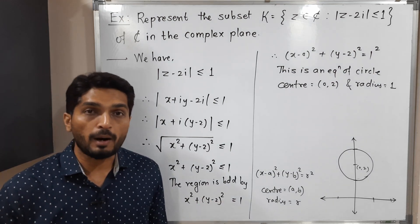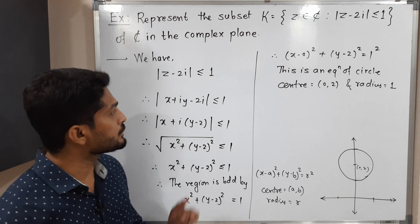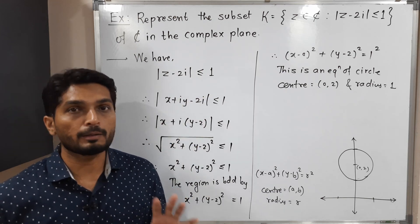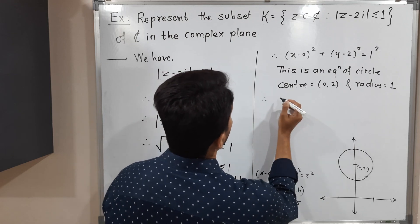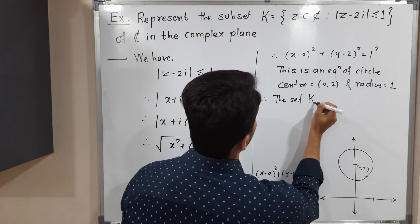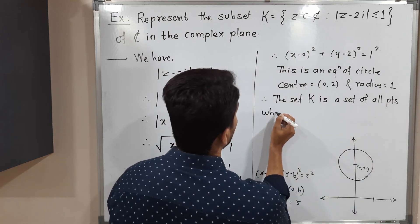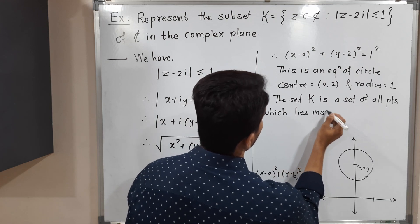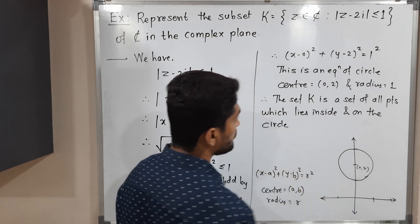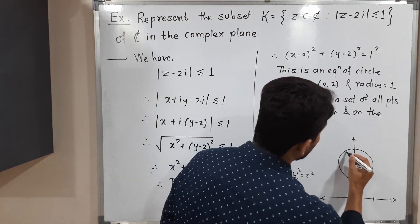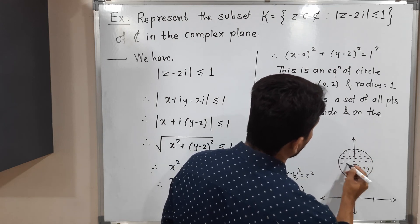The region is bounded by that circle, meaning we have to consider the complete interior part of the circle. They have clearly mentioned less than or equal to — so 'less than' means the interior part, and 'equal to' means the boundary of that circle. Therefore the set K is the set of all points which lie inside and on the circle.